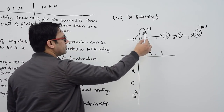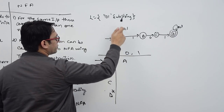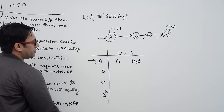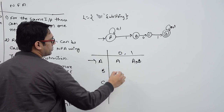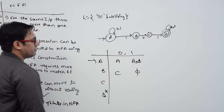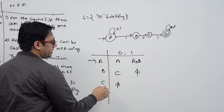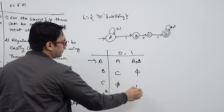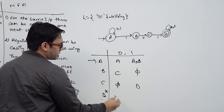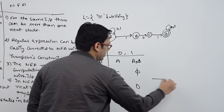From state A on symbol 0, we go to state A. On symbol 1, we go to states A and B. From state B on symbol 0, we go to state C. On symbol 1, we go to phi (empty). From state C on symbol 0, we go to phi. On symbol 1, we go to state D. From state D on both symbols 0 and 1, we stay at state D.